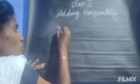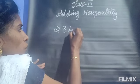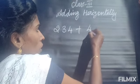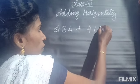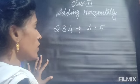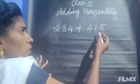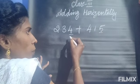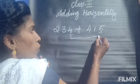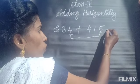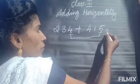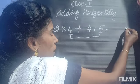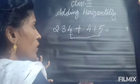Suppose if there are two numbers — 234 plus 415. To add this, you first add the number in the ones place. Here the number in the ones place is 4 and 5. So 4 plus 5, what do we get? 9. Write 9 in the ones place.